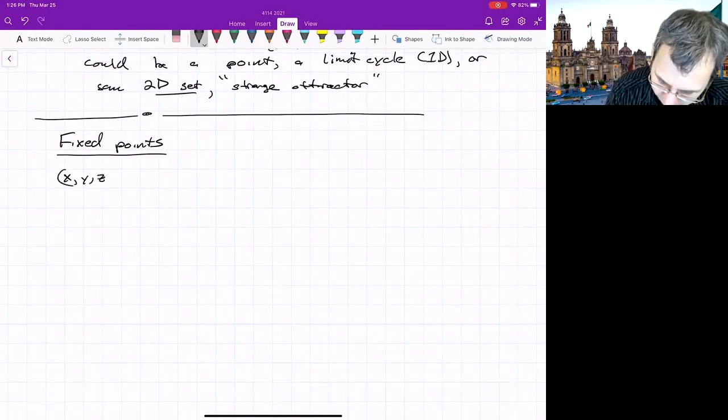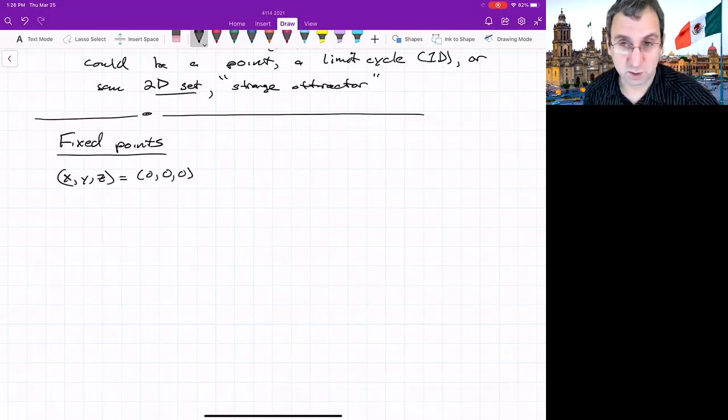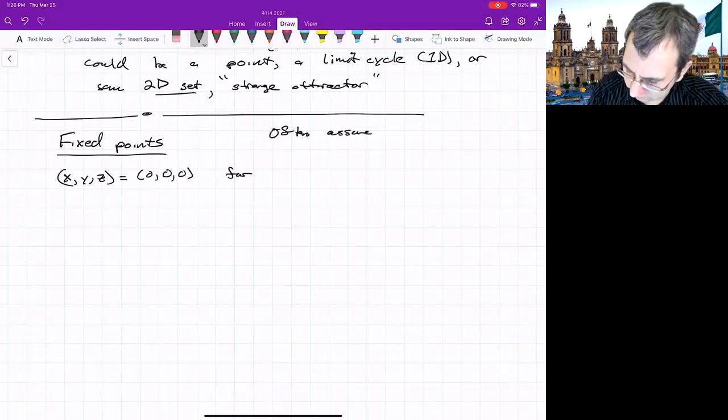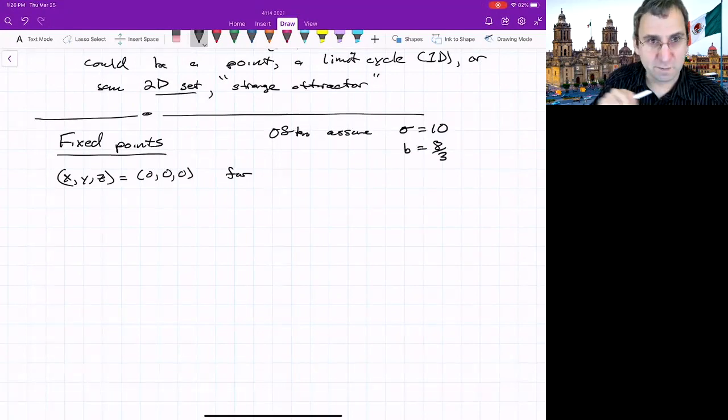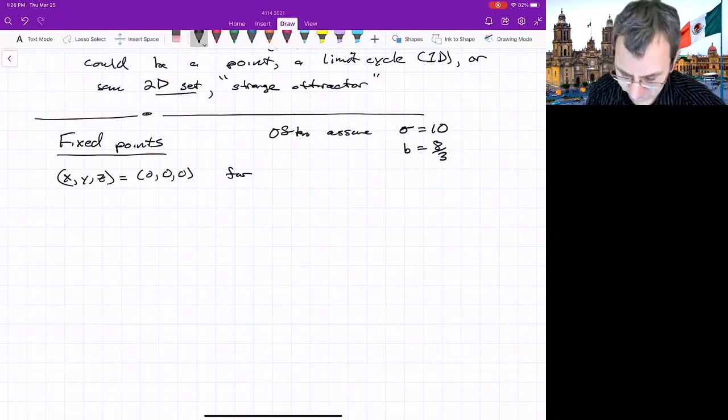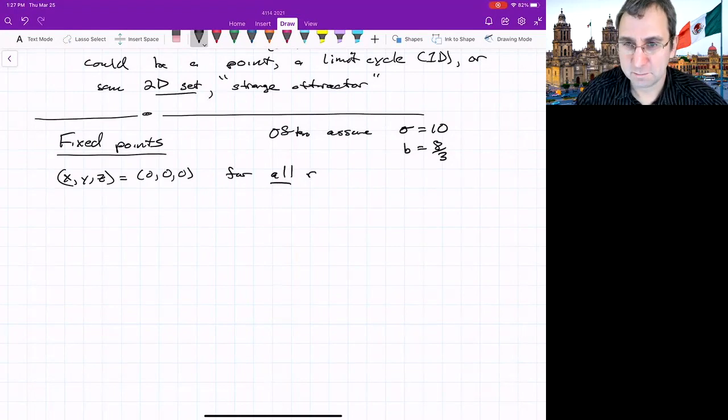So x, y, z equals (0,0,0) is a fixed point. We often just assume, and I alluded to this up above, that the other two parameters are fixed at some certain values. And then we let R vary, the Rayleigh number. B doesn't even have a name. Might call it the aspect ratio number, but whatever. The origin is a fixed point for all R, but what stability type is it? We'll get to that.